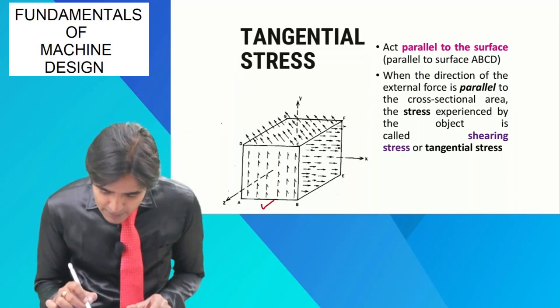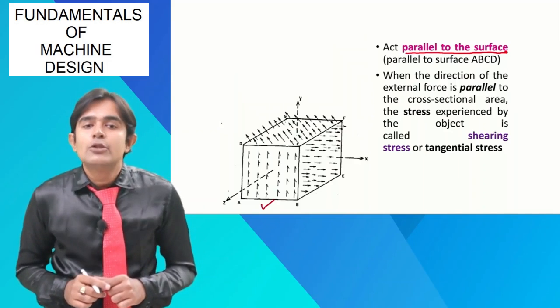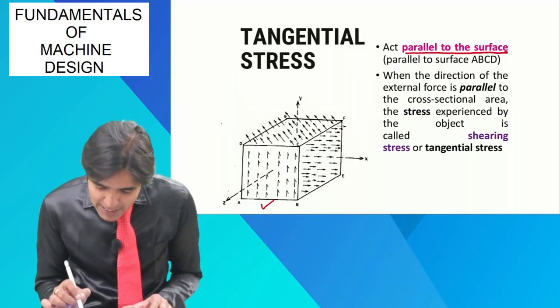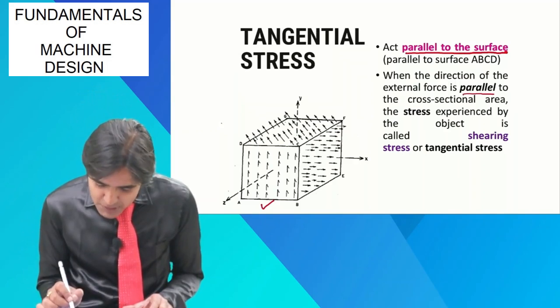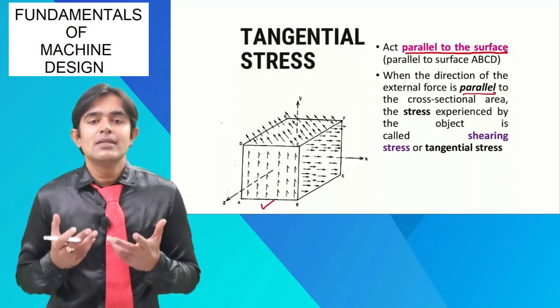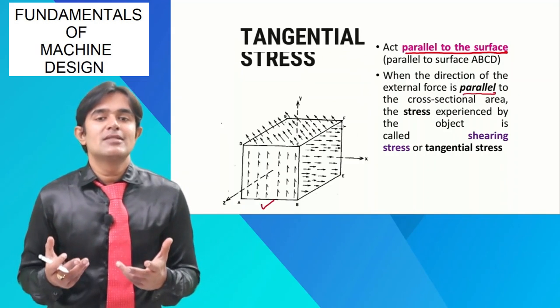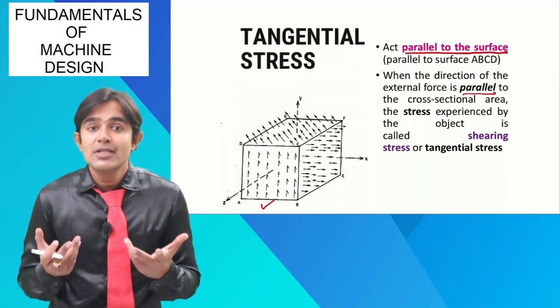So if tangential force is acting parallel to the surface, meaning when the direction of the external force is parallel to the cross-sectional area, then the stress experienced is called tangential stress. We also call tangential stresses shear stresses.